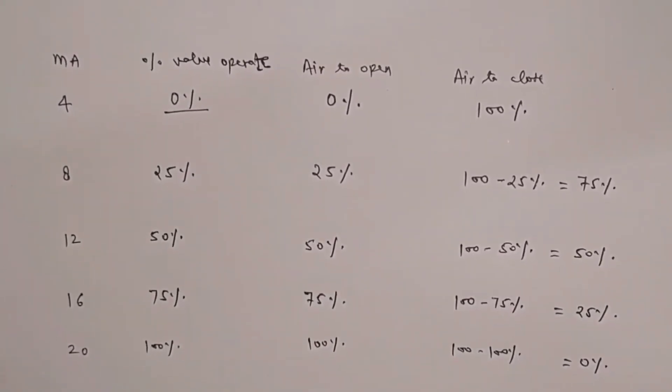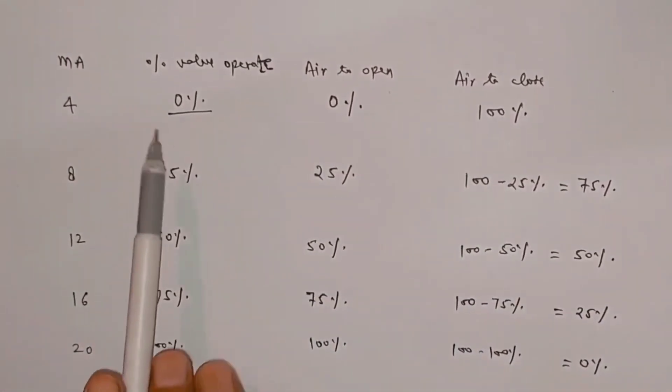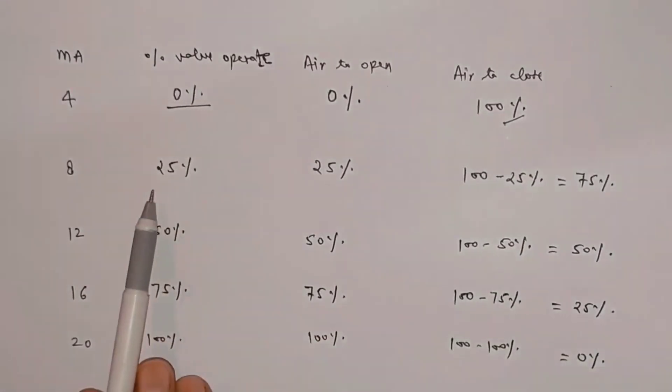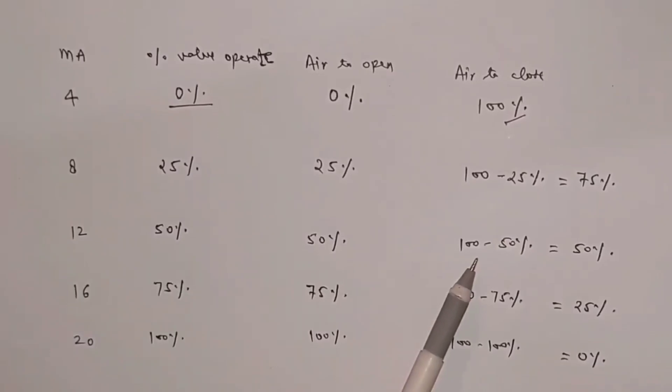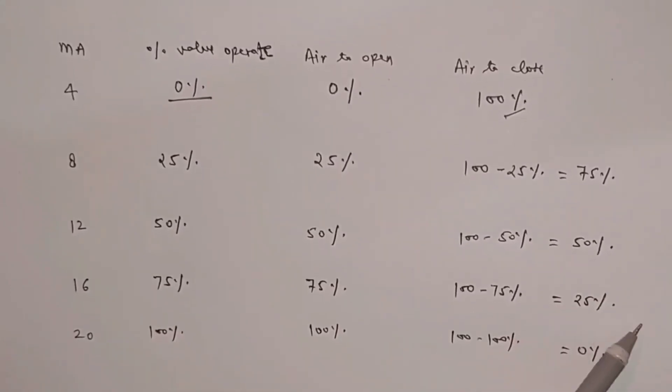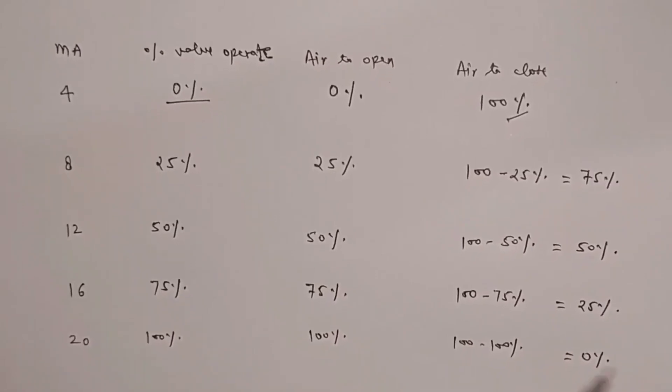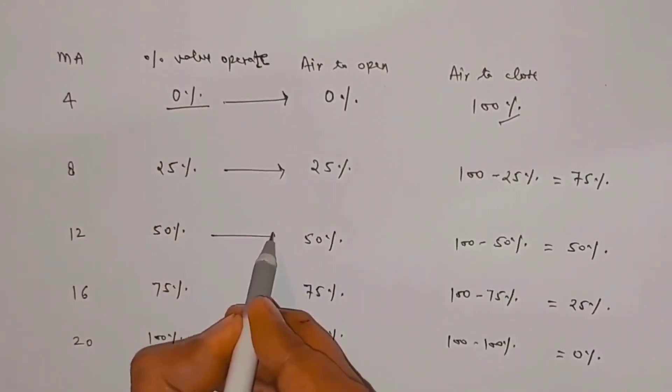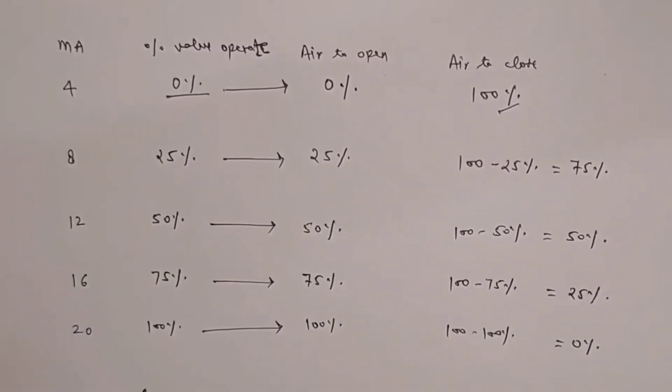Friends, here you need to keep in mind that when we see the opening of air to close control valve, we will subtract it from 100. Like at 0% it was 100 minus 0, means 100%. At 25%, it will be 100 minus 25, means 75%. At 50%, 100 minus 50, means 50%. At 75%, 100 minus 75, means 25%. And at 100%, 100 minus 100, means 0%. And air to open control valve will operate exactly like this: 0% at 0, 50 at 50, 75 at 75, and 100% at 100.